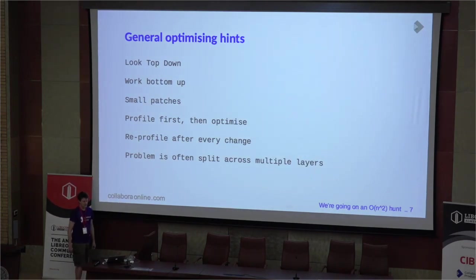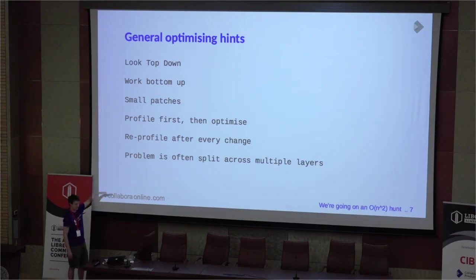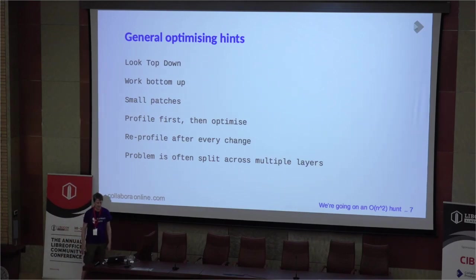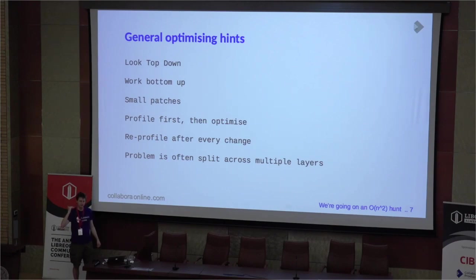Generally, when I'm optimizing, I start at the top of the program and work down to get an idea of where the bulk of the time is hiding. That means in the case of the flame graph, I'm working from the bottom of the flame graph. But once I get an idea of where the hotspots are, I switch my view and start looking at the top of the stack — in other words, the top of the flame graph — and work down from that point to try and find localized hotspots that I can optimize.